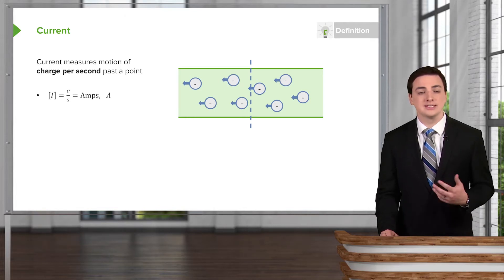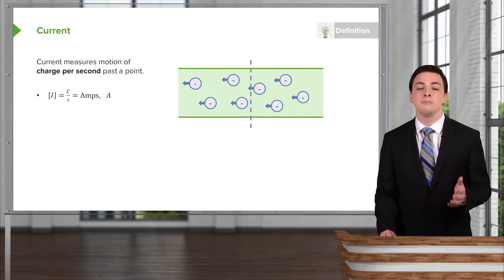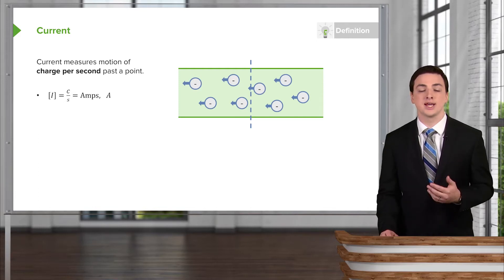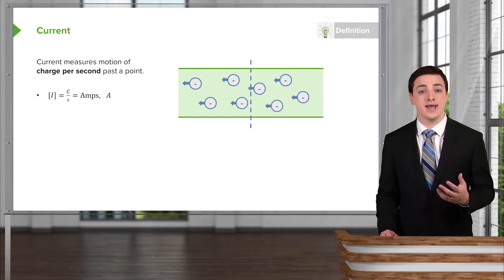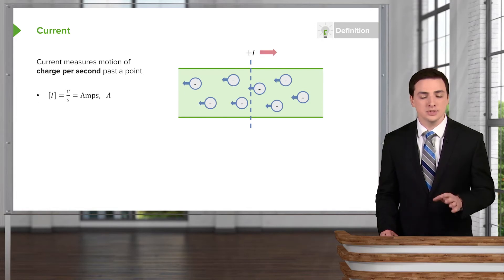We measure the current exactly as you would expect. It's the number of coulombs, the amount of charge, passing a given point per second. And we call this coulombs per second an amp. So amps, which is symbolized by the letter A, is telling us how much current is flowing in a circuit or how many coulombs per second.